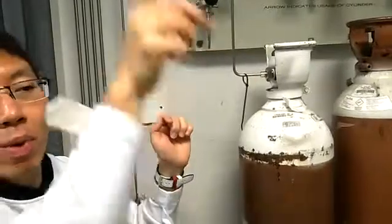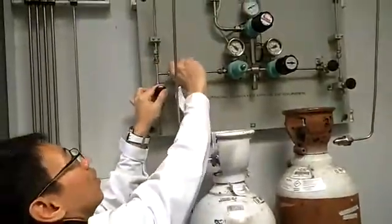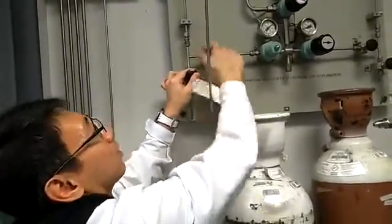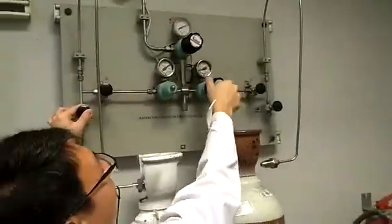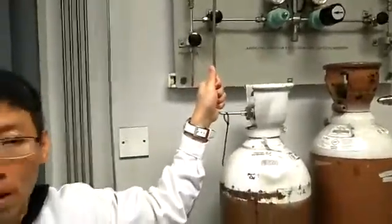So how do you purge it? Do three times of rinsing. Then you can open this valve. Open this, the gauge will go up. And then you can turn to this channel, and the gas will continue to supply to the system. Clear?